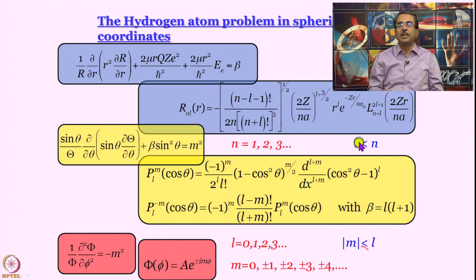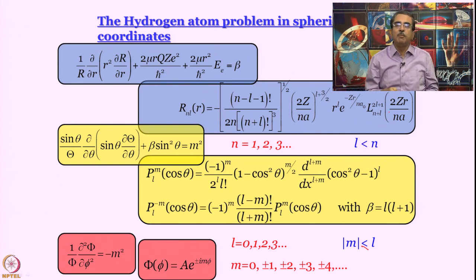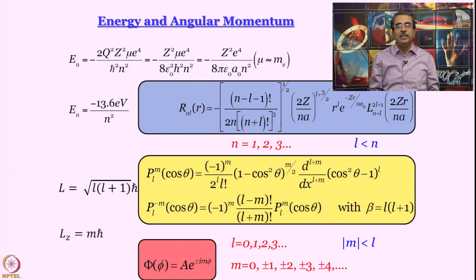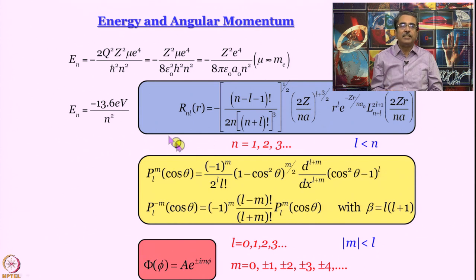We also learn that l < n. What is the information about the atom that we get from these 3 different parts? From the radial part, we get to know the energy. The expression for energy is the same as what you get from Bohr theory: −13.6 eV / n².